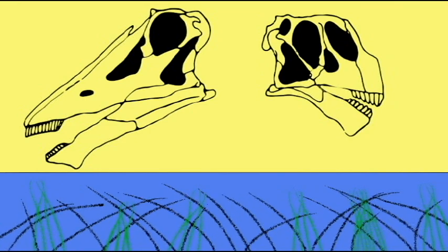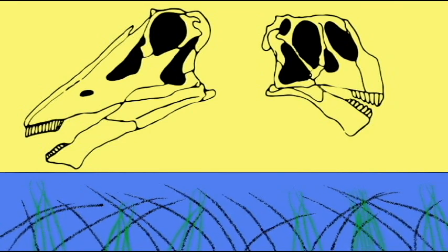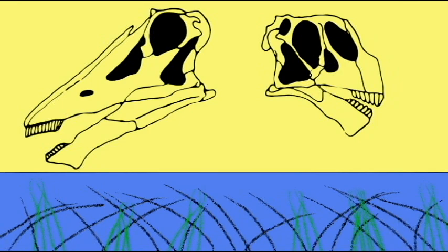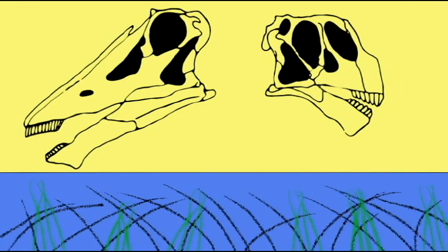In sauropod skulls, the nostril position had been modified so that the nostrils were located farther up on the head.